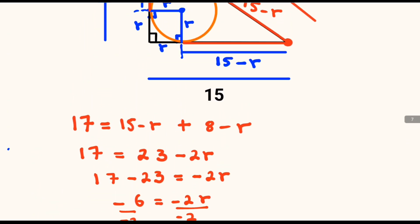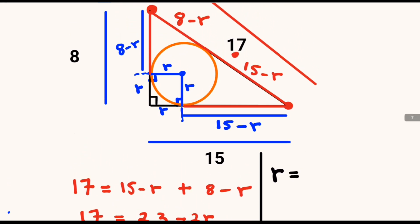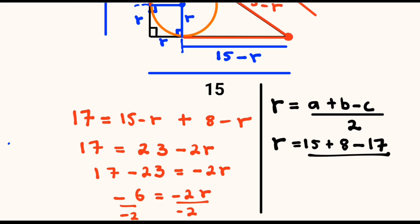Alternatively, we can determine our radius using this formula. If we have a circle inscribed inside a triangle, then the radius will be equal to (a plus b minus c) divided by 2, where a is the adjacent, b is the length of the opposite, and c is the length of the hypotenuse. Our adjacent has been given as 15, while the opposite is equal to 8,